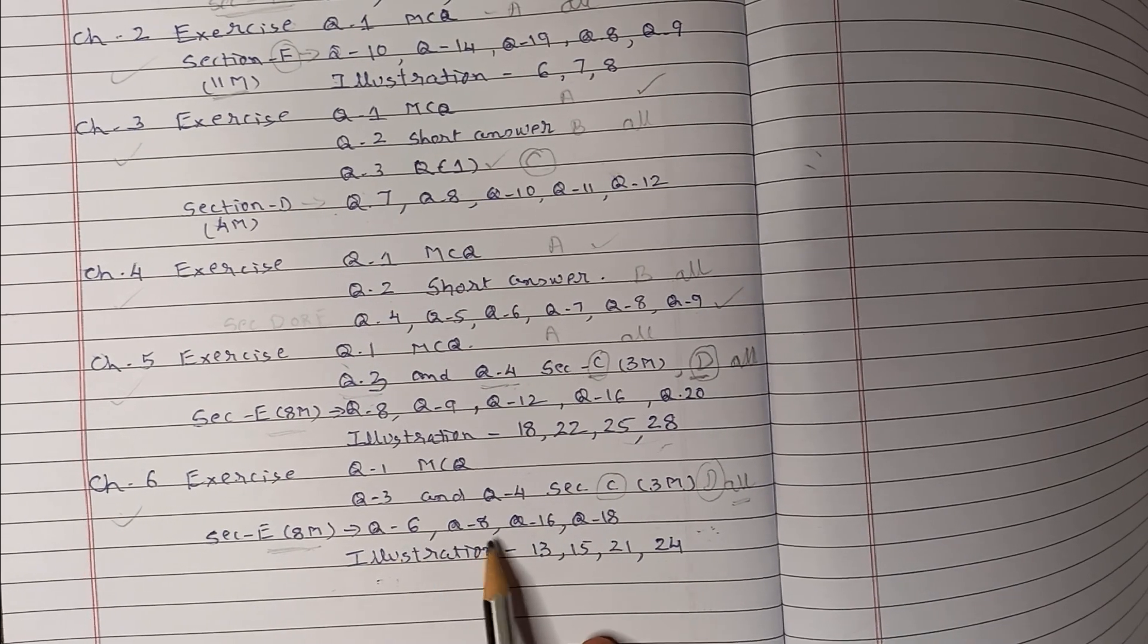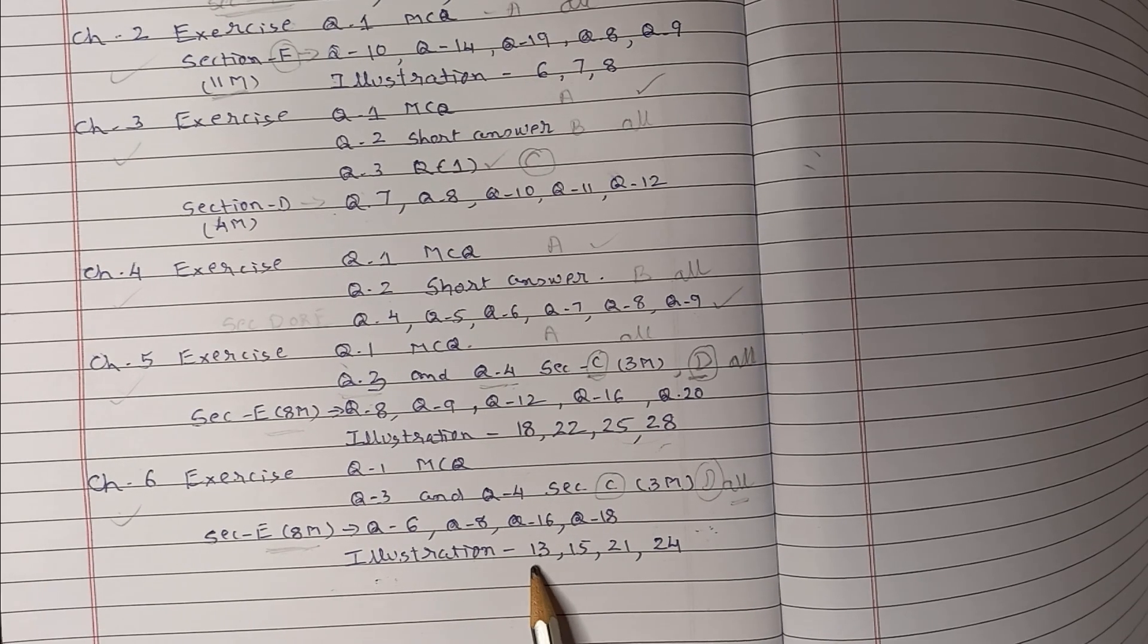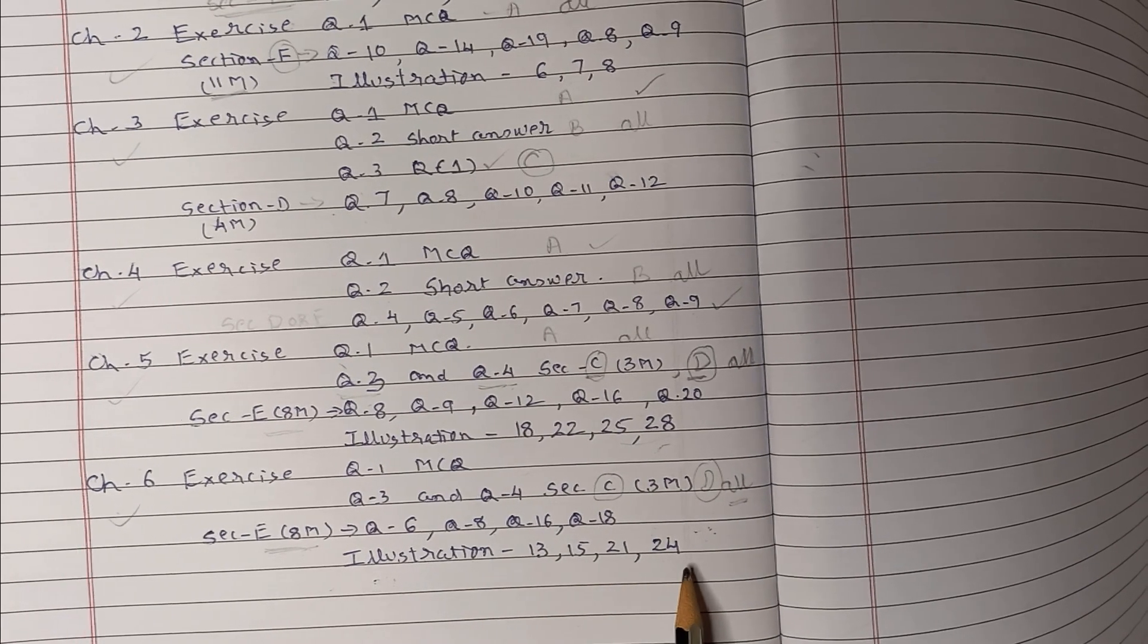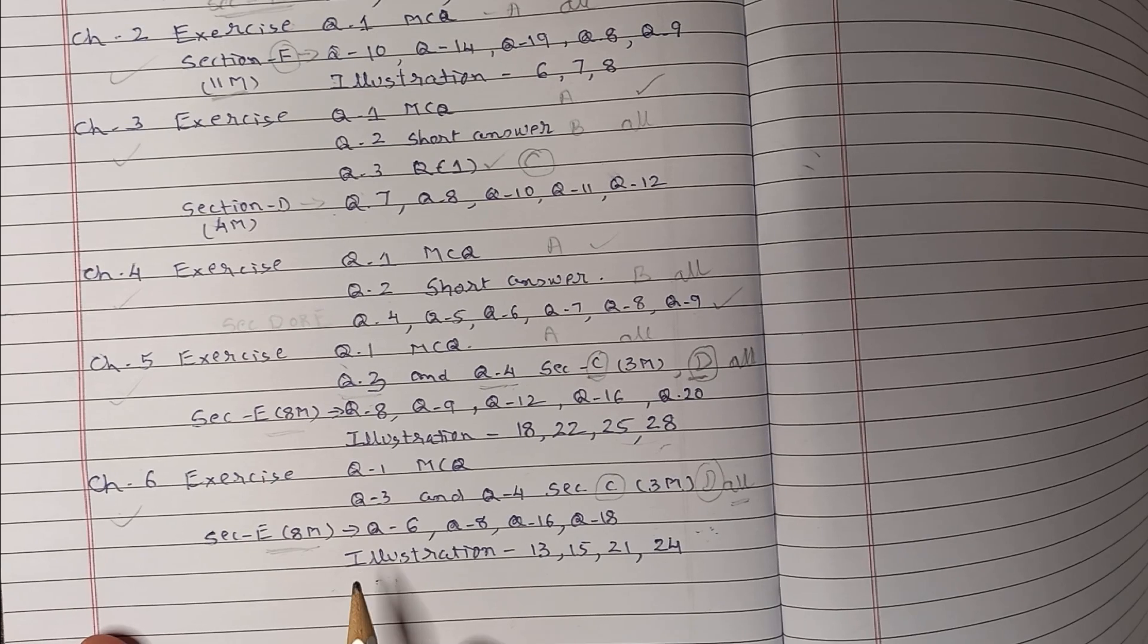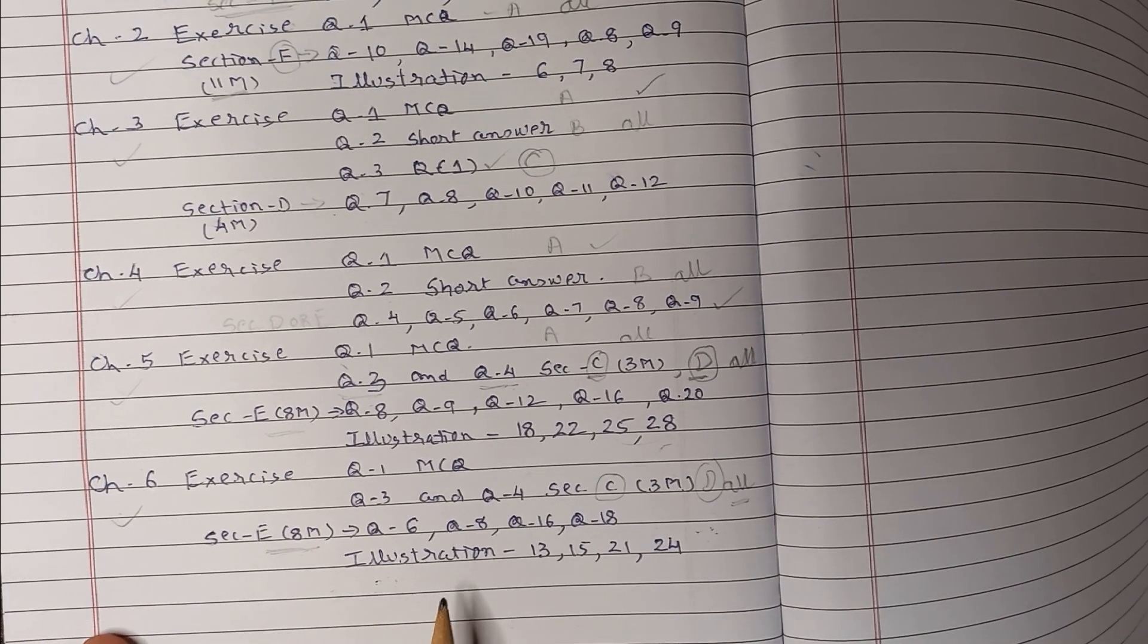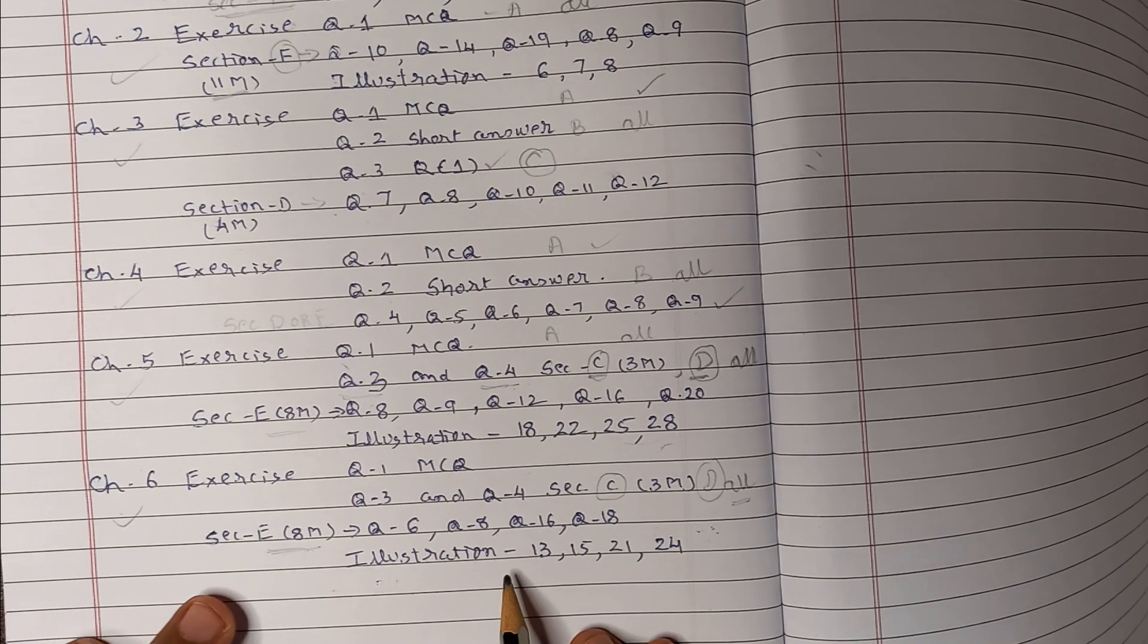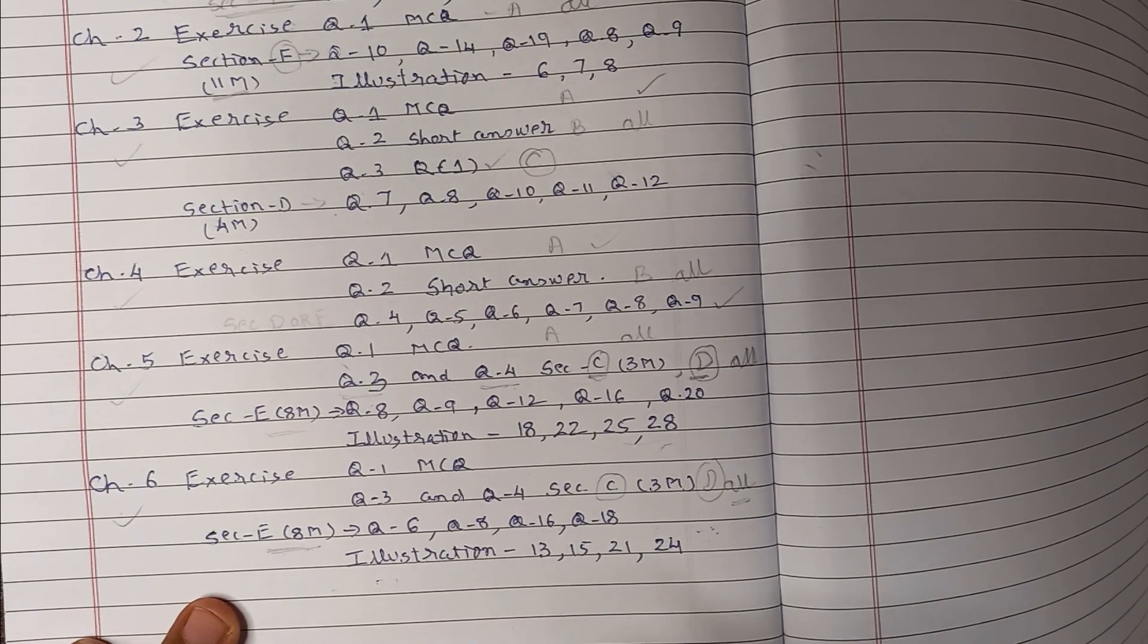So the questions are 6, 8, 16, 18. Illustrations if you check out 13, 15, 21, 24. In this exam, better do the executor question very well. All possibilities are there, executor question will be there in exam because last year they have eliminated, so this time they are going to ask.